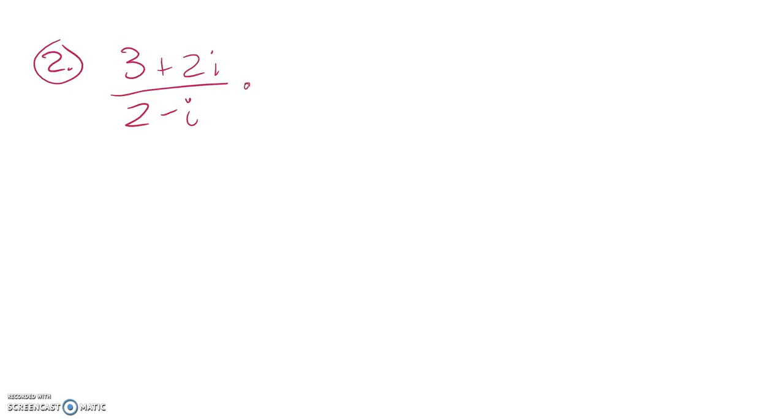So what I need to do is make it so there's not an i in the denominator. And so since I have 2 minus i down here, I'm going to multiply it by a version of 1 that uses its conjugate, 2 plus i.